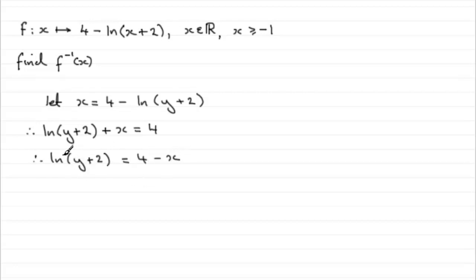Now at this point, I need to get rid of the natural log. And that means we anti-log. In other words, we're left with y plus 2 equals e. Remember this is to the base e when you've got natural logs. So it's that base e to the power of 4 minus x.